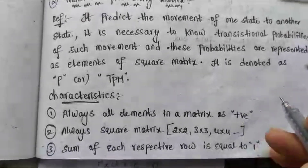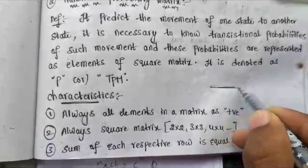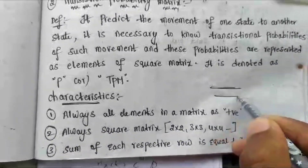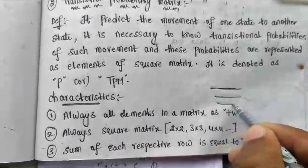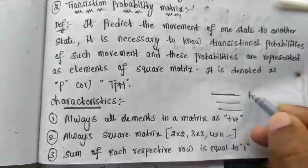The third characteristic of a TPM is that the sum of each respective row must be equal to 1. That means every row of elements, when summed, equals 1.